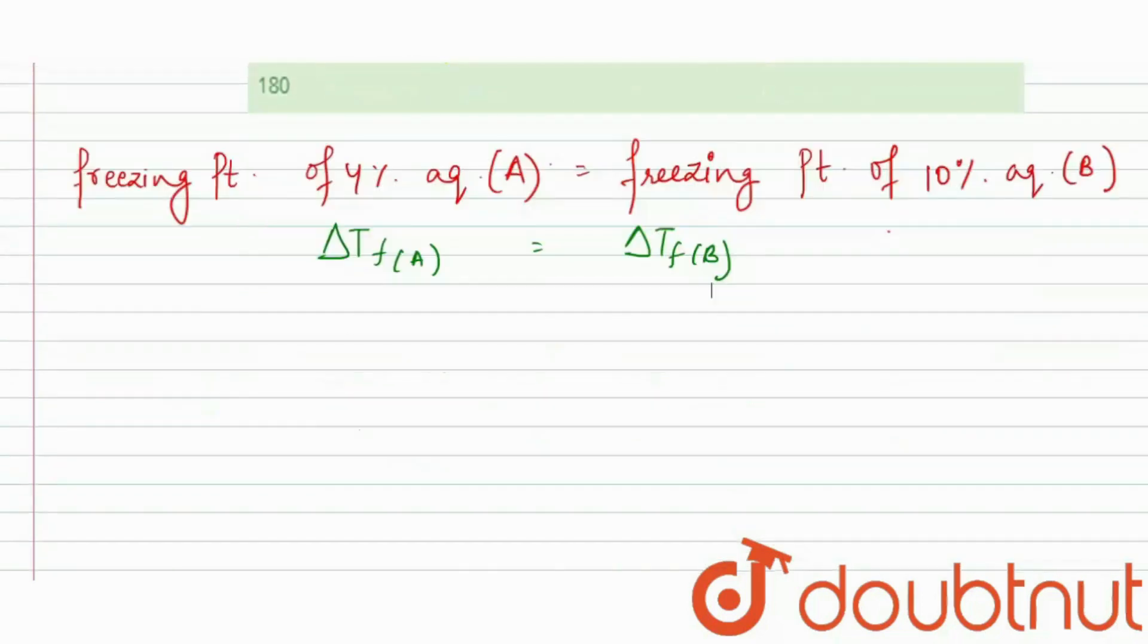Delta Tf is equal to Kf into I into M. In this question, we will not consider I. Why? Because in the question, there is no mention of the electrolyte. So, we will just consider Kf into M.